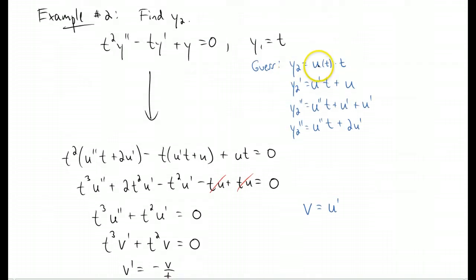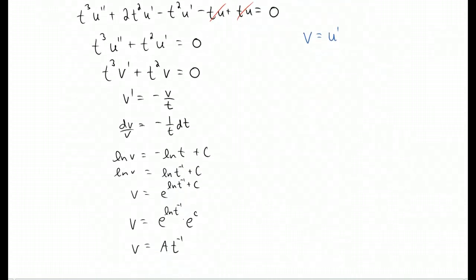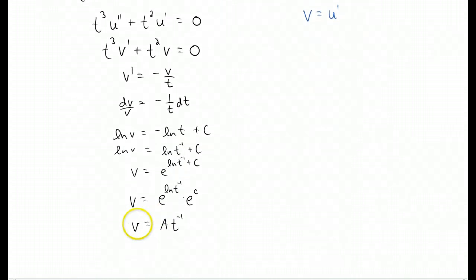And to find y2, we needed to figure out what u was. And to find out what u was, we had to use the substitution v. So we need to get back to u, so then we can get back to y sub 2.